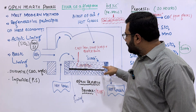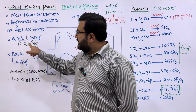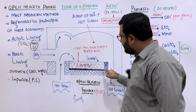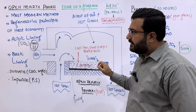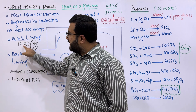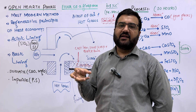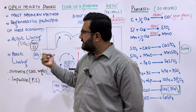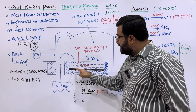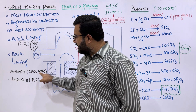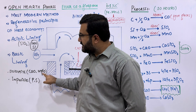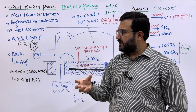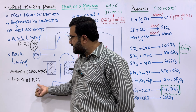The hearth of the open hearth furnace can be lined with silica — this is called acid lining and is used to remove impurities like manganese and silicon. If the hearth is lined with dolomite, which is a mixture of calcium oxide and magnesium oxide, then this is called basic lining, and this basic lining is used to remove impurities like phosphorus and sulfur.